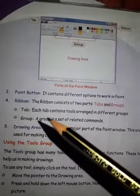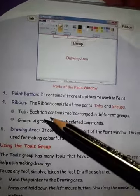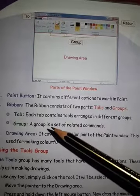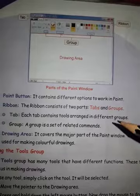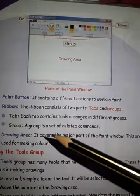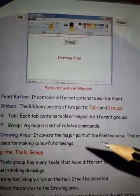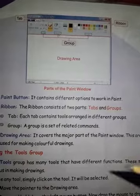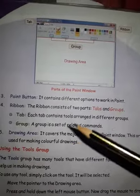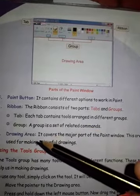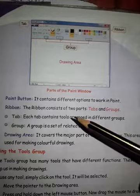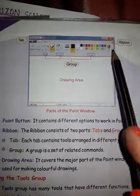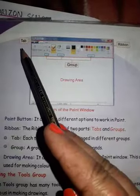Next is the Ribbon. The Ribbon consists of two parts: Tab and Group. Each Tab contains tools arranged in different groups — tools like the Pencil Tool, Line Tool, and so on. A Group is a set of related commands. Tab and Group are the parts of the Ribbon.